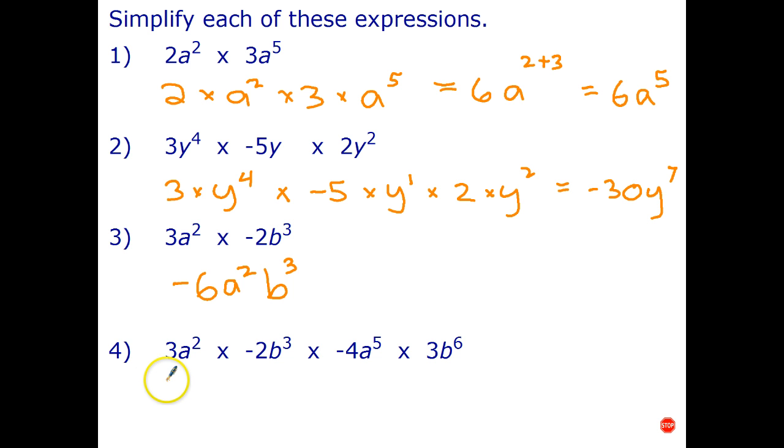So for the last one we've got two bases with a, two bases with b, so let's go ahead and start by multiplying those together. Three times negative four is negative twelve. a squared times a to the fifth, the rule for multiplying powers is to add indices. Now let's look at the two factors involving b. Negative two times three is negative six. b cubed times b to the sixth is b to the ninth. Now that's correct but it can be written a bit more simply. We tend not to like writing multiply signs because they look too much like x's.